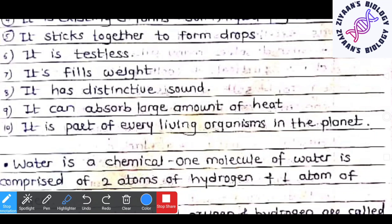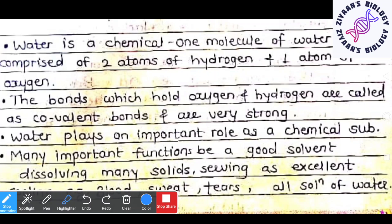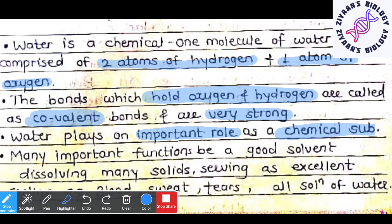Water is a part of every living organism on planet Earth. Water is a chemical in which one molecule is comprised of two atoms of hydrogen and one atom of oxygen. The covalent bonds that hold the oxygen and hydrogen together are very strong. Water plays an important role as a chemical substituent.